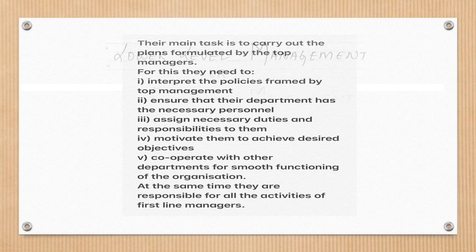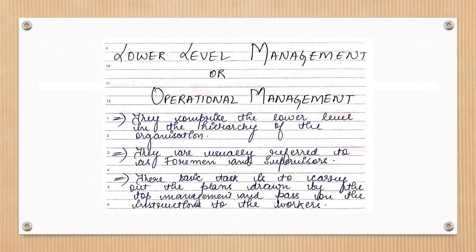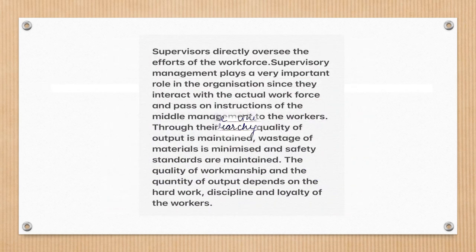Lower-level managers are at the bottom of the hierarchy and are called first-line managers, foremen, or supervisors. They are directly linked with the workforce. They take orders from middle-level managers and pass them to workers, and they interact directly with workers.